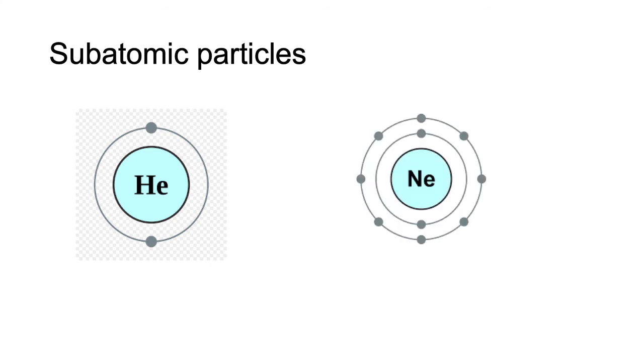We would draw neon like this. The first 2 electrons would go into the first shell. We still have 8 left over, so they would go into the second shell. Neon is happy and fulfilled because its valence electron shell is full. It has satisfied the octet rule.